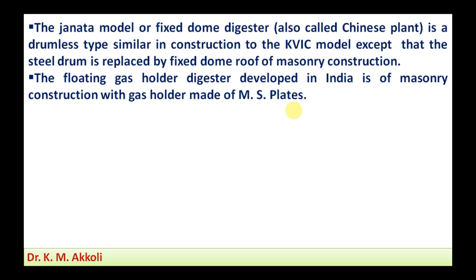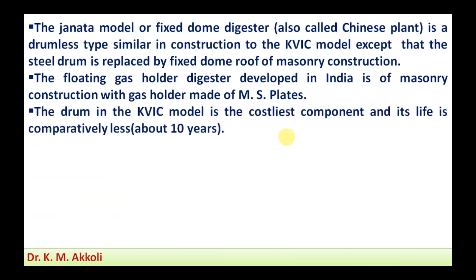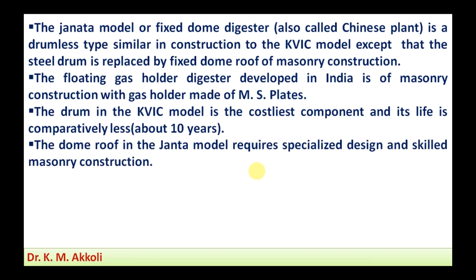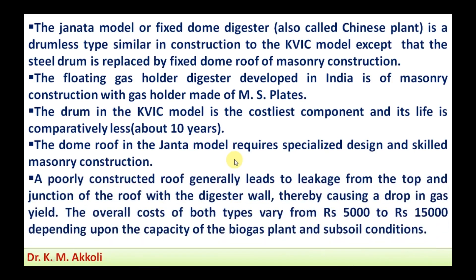The drum in the KBIC model is made up of MS plates and is the costliest component, with a comparatively short life of about 10 years. Because of this disadvantage, the fixed dome type became popular. However, the dome in the Janta model requires specialized design and skilled masonry construction. A poorly constructed dome generally leads to leakage from the top and junction of the roof with the digester wall, causing a drop in gas yield.